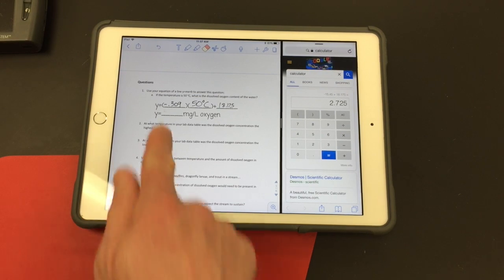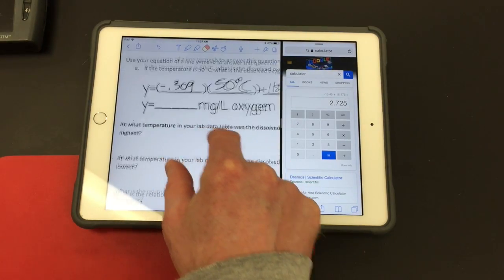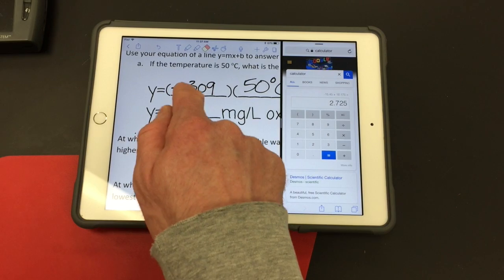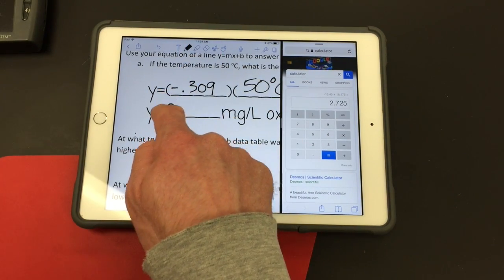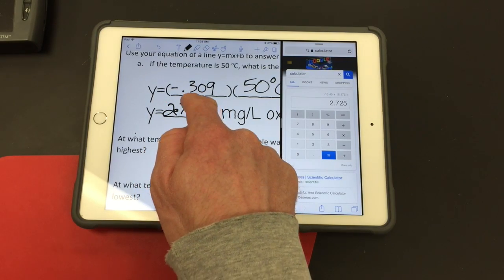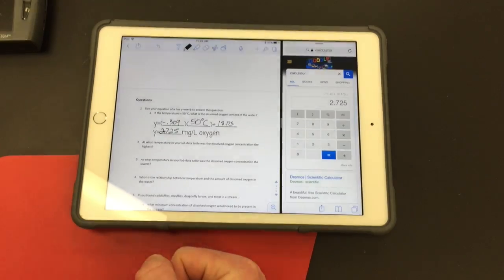Alright, so according to the equation of the line and my calculation, if the temperature is 50 degrees, the dissolved oxygen content in this case, based on my data, would be 2.7. I'll just write 2.5 milligrams per liter oxygen.